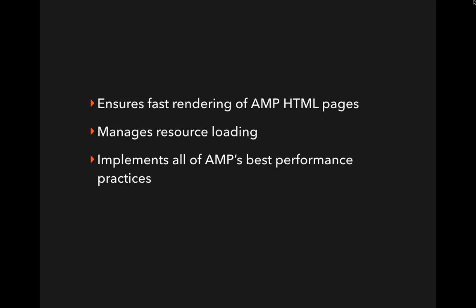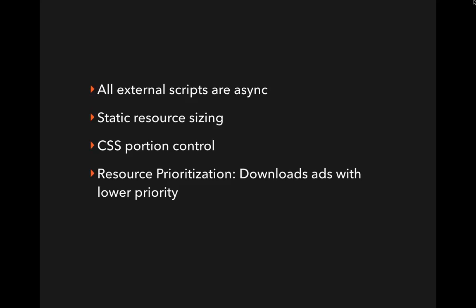AMP JavaScript ensures the fast rendering of AMP HTML pages. It manages the way resources are loaded on the page so there can't be any resources blocking your content from being loaded — that's one of the reasons the content loads so fast. There's a big list of performance practices on the Google AMP project website. A few of those: all external scripts are asynchronous; static resource sizing makes sure content doesn't jump around on the page; CSS portion control only loads the CSS needed to display the content; and resource prioritization, which means ads are only downloaded after the content has been downloaded, so ads loading doesn't block the user from interacting with the content.